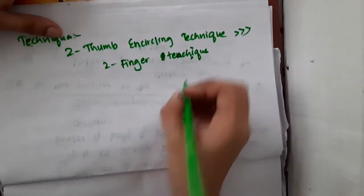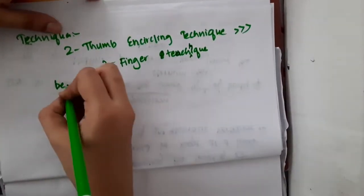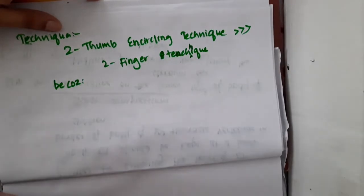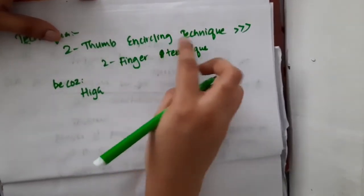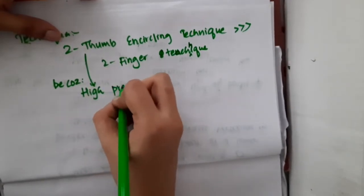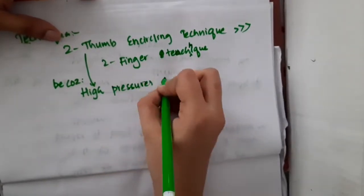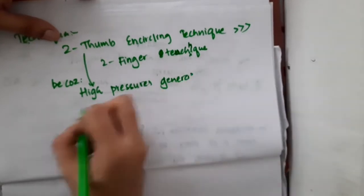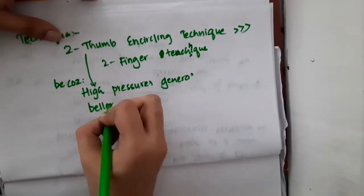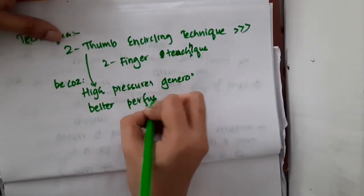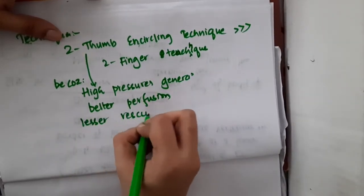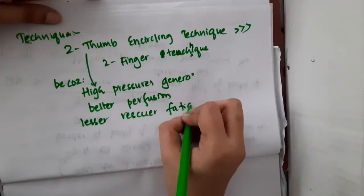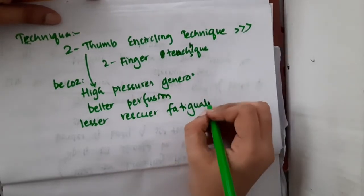Because with two thumb encircling technique, you can develop higher pressures. Higher pressures are generated and it will also provide better perfusion, and it will have lesser rescuer fatigability.